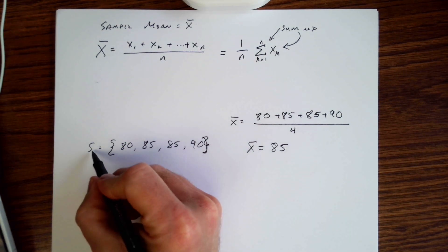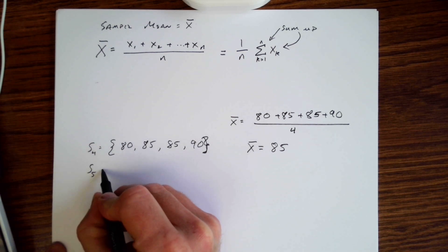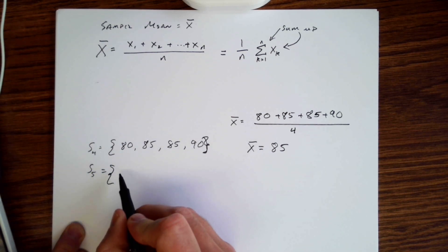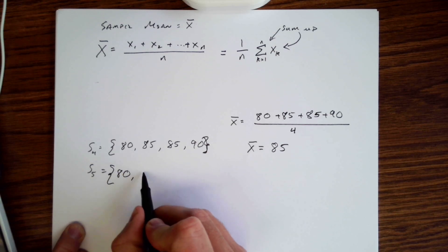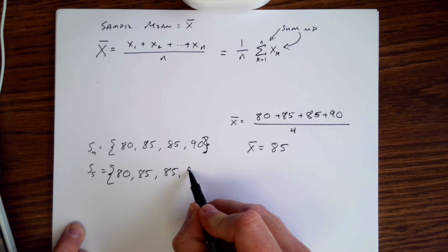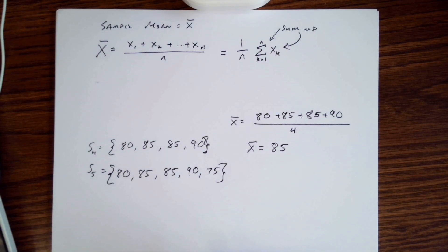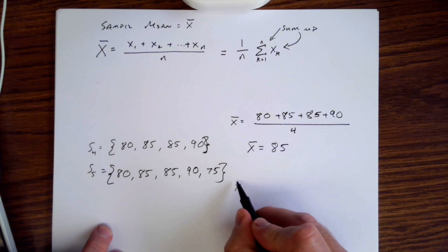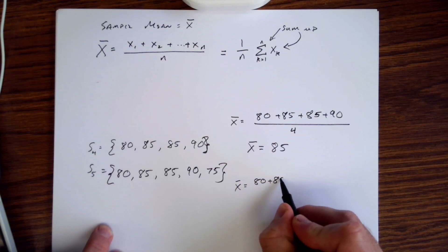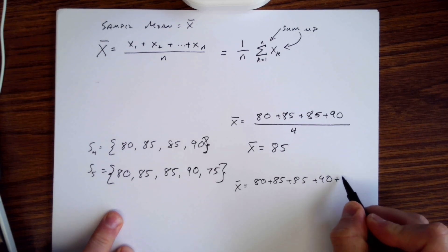So we have 80, 85, 85, 90, and then some other value. Let's say that it is 75. What does that do to our sample? Well then we're doing X bar is now 80 plus 85 plus 85 plus 90 plus 75, and now we're dividing by 5.